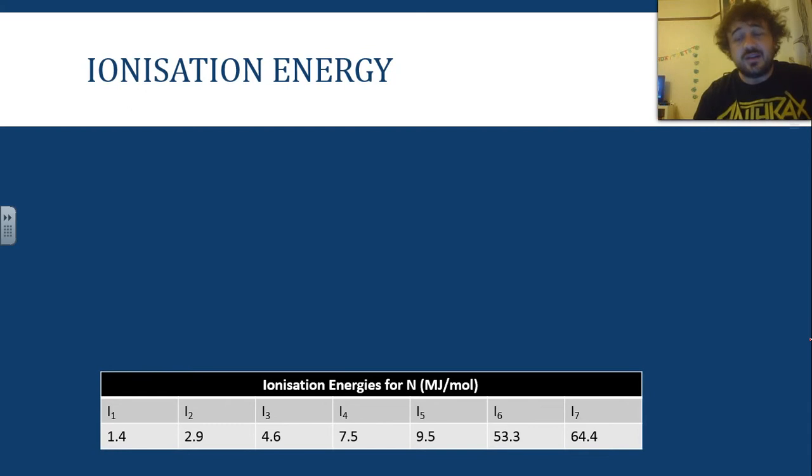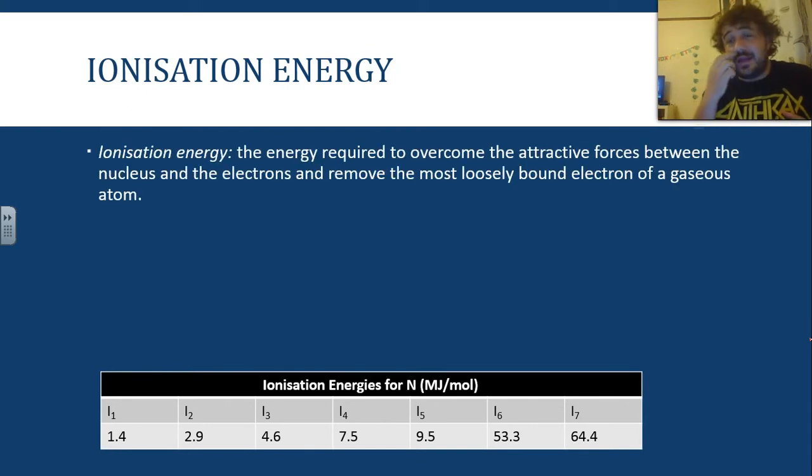First ionization energy, or ionization energy, what is it? It's essentially the energy required to overcome the attractive forces between the nucleus of an atom and the electron. And basically, it's what's required to remove the most loosely bound electrons of a gaseous atom. Now, that means in particular, the most outer electron. And once that one's gone, we're then talking about the next outer electron, and so forth.